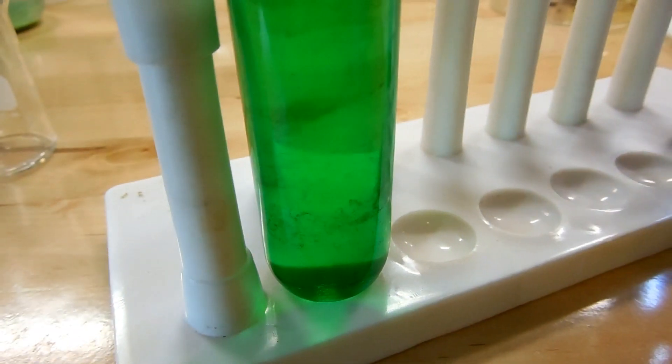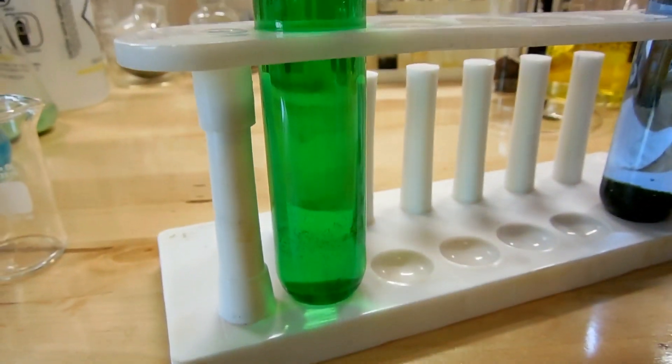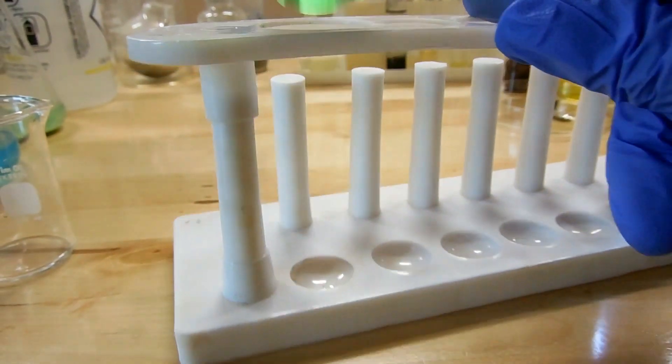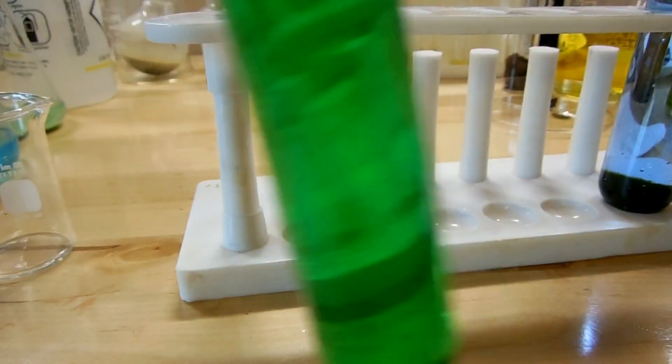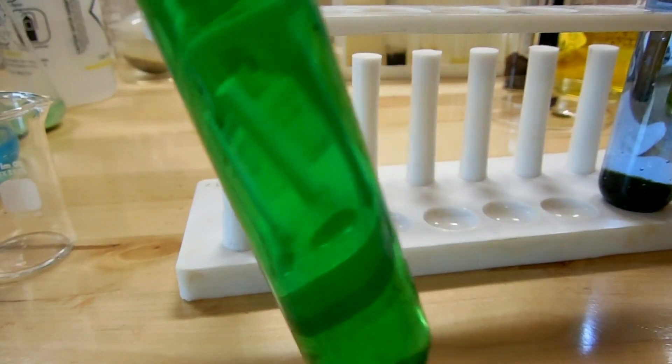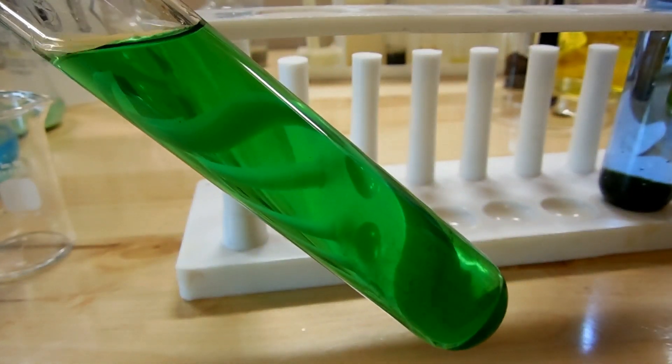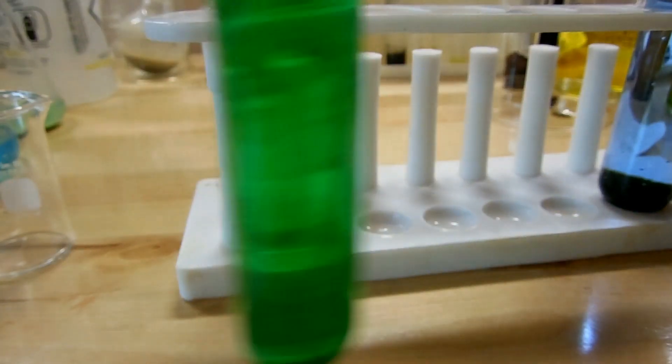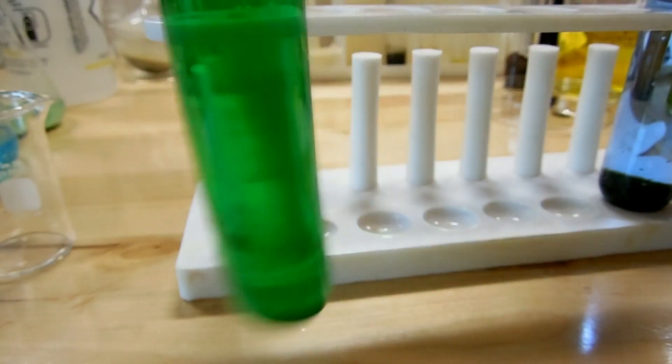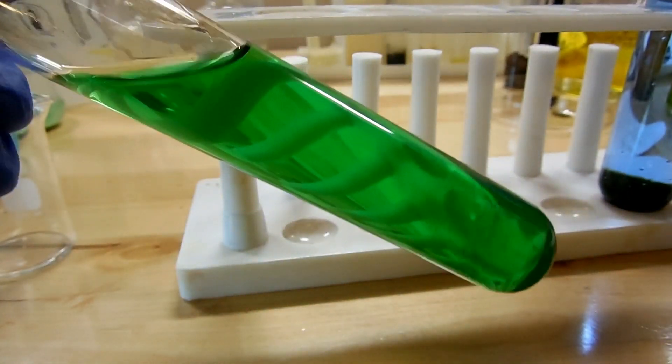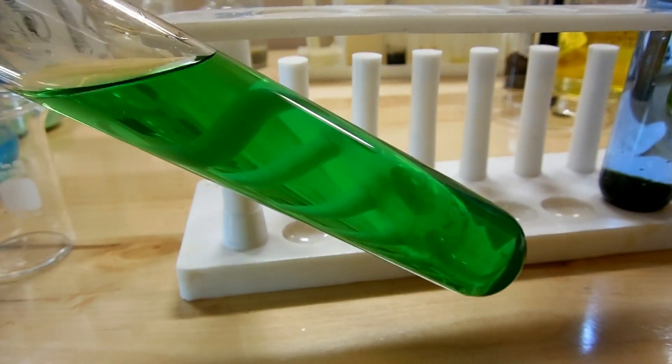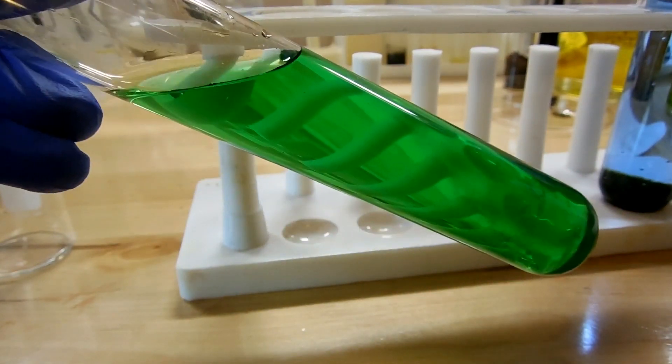And you can see we get just a gorgeous color change to a beautiful emerald green. This is one of the things I like the most about copper chemistry, is that the colors are so varied and you can do one experiment and see so many different things happening. So just a gorgeous range of colors.